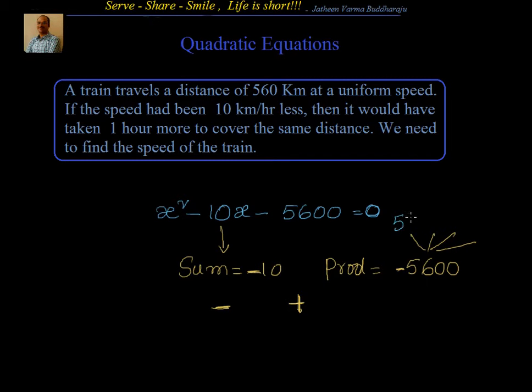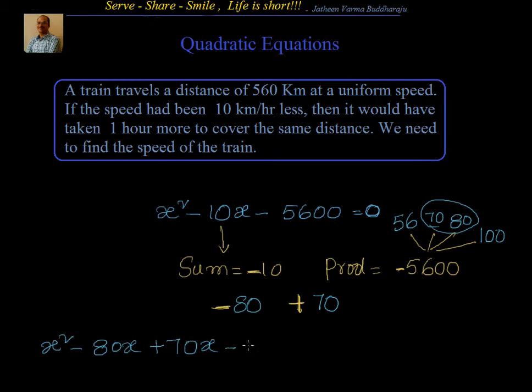We have to find two numbers such that their difference is 10 and the product is minus 5600. For that we will look at the factors of 5600 where the difference is 10. Let's say we have 56, 100, then 70, 80. I think 70 and 80 have a difference of 10, so I can write it as minus 80 plus 70.